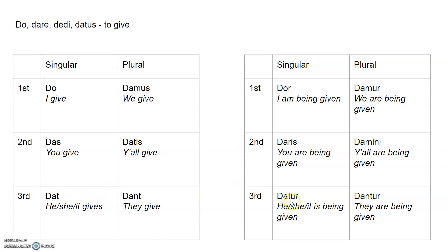But you can do this in all the other persons too, and we're going to be seeing examples of this soon. Do — I give — turns into dor, I am being given. Das turns into daris, you are being given. And we know dat turns into datur — he, she, or it is being given. Damus turns into damur, we are being given. Datis turns into damini, which is fun to say — y'all are being given. And dant turns into dantur.